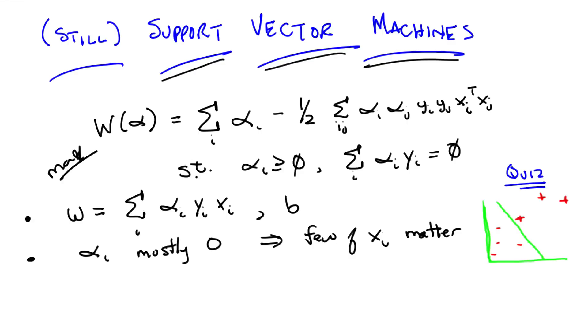I want you to point to one of the positive examples that almost certainly is not going to have a non-zero alpha, and one of the minus examples that almost certainly is not going to have a non-zero alpha. That is, are not a part of the support vectors.